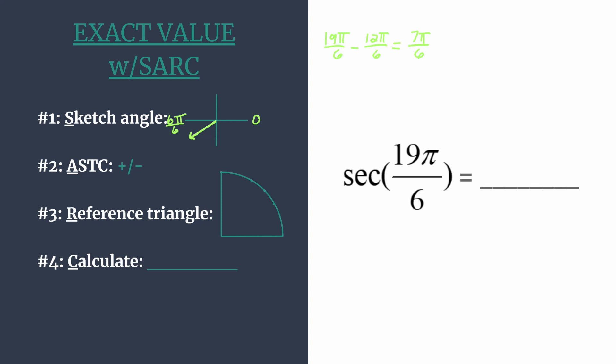Now that we have our angle sketched, we're ready for step 2 where we use ASTC and determine the sign for our final answer. All Students Take Calculus. This acronym helps us know which trig functions are positive in each quadrant. Starting in quadrant 1, all are positive. Sine and cosecant are positive in quadrant 2. Tangent and cotangent are positive in quadrant 3. Cosine and secant are positive in quadrant 4.